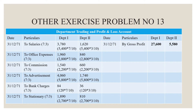Salaries are given as $5,400. For Department 1: $5,400 × 7/10 = $3,780. For Department 2: $5,400 × 3/10 = $1,620. Office expenses are $2,800. For Department 1: $2,800 × 7/10 = $1,960. For Department 2: $2,800 × 3/10 = $840.